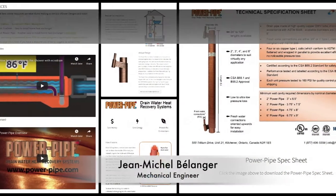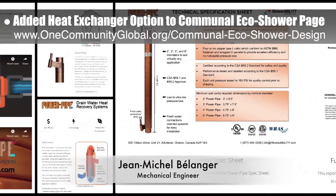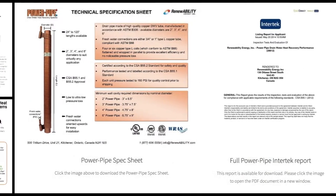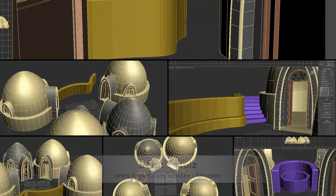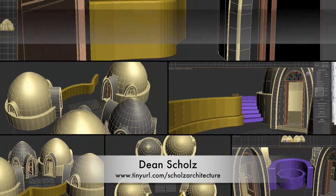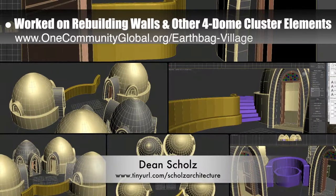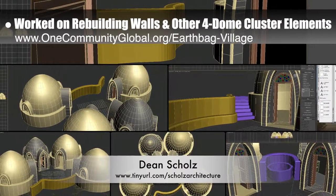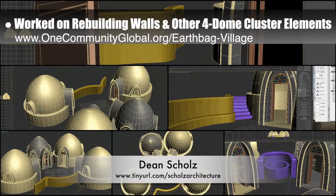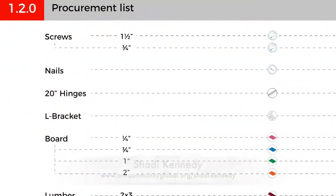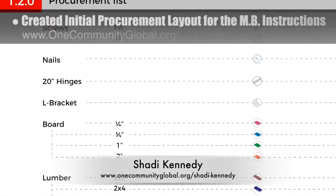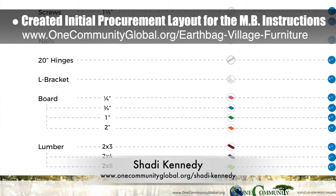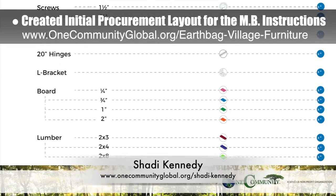The core team, with the help of Jean-Michel Balanzia, also researched and added another heat exchanger option to the resources section of the communal eco-shower page. Dean Schulls, architectural designer, continued working on the EarthBake Village — this is weekly update 159 from Dean. This week he worked on rebuilding the walls and other four-dome cluster elements to match the new layout created last week in AutoCAD. Shadi Kennedy, artist and graphic designer, also completed his 51st week leading the development of the Murphy Bed Instructions. This week's focus was creating the initial procurement layout.